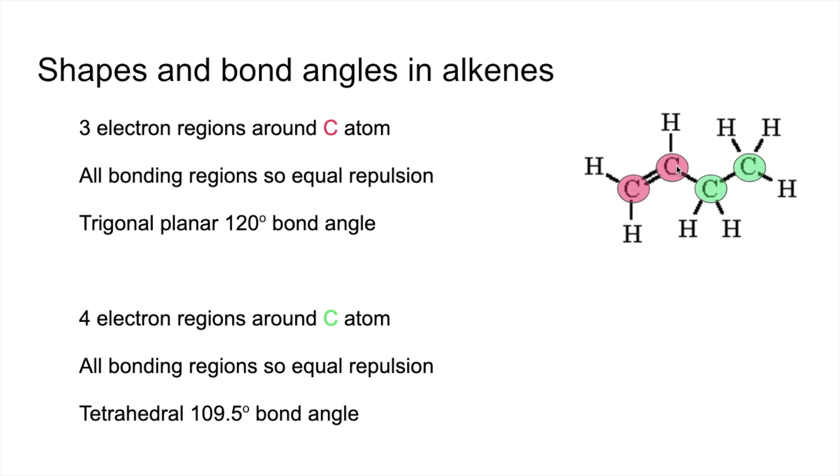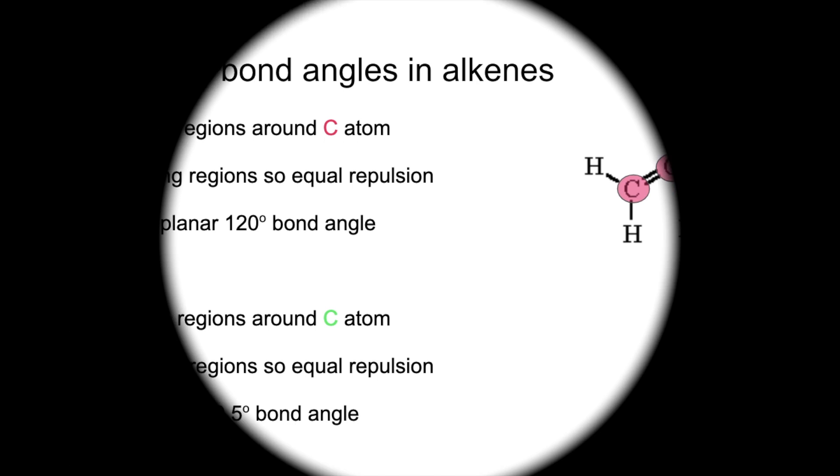In any alkene you've got a planar—so it's flat around the carbon-carbon double bond—and then you've got the regular tetrahedral arrangement around the other carbons that are singly bonded.